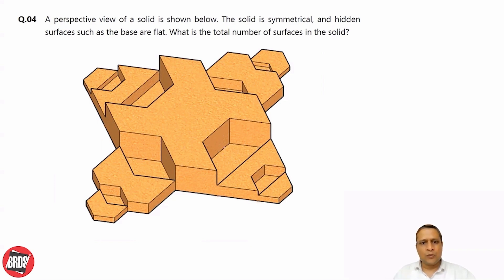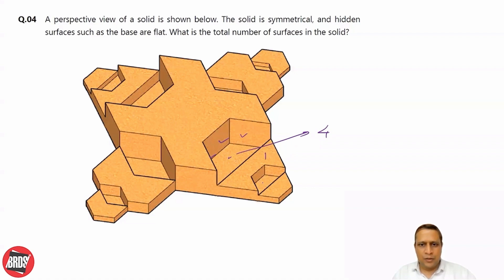If you count the number of surfaces here, you have 1, 2, 3 and 4 — so total 4 surfaces here. Then here also 4: 1, 2, 3 and 4 — 4 surfaces here.